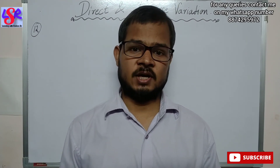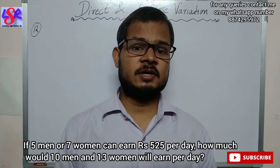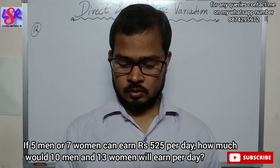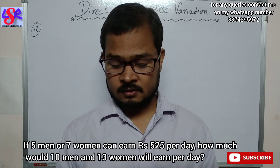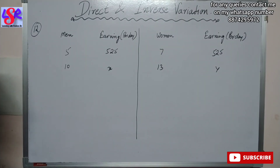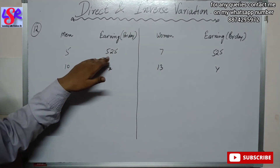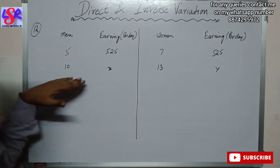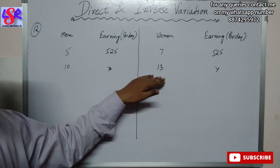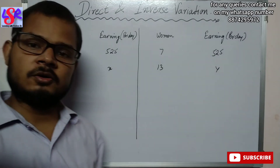Now we go to question number 12. If five men or seven women can earn 525 rupees per day, how much would 10 men and 13 women earn per day? We have two cases — one for men and one for women. Five men or seven women earn 525 rupees per day, and we have to find the total earnings of 10 men and 13 women. We will first find the earnings of 10 men and 13 women separately, then add them.